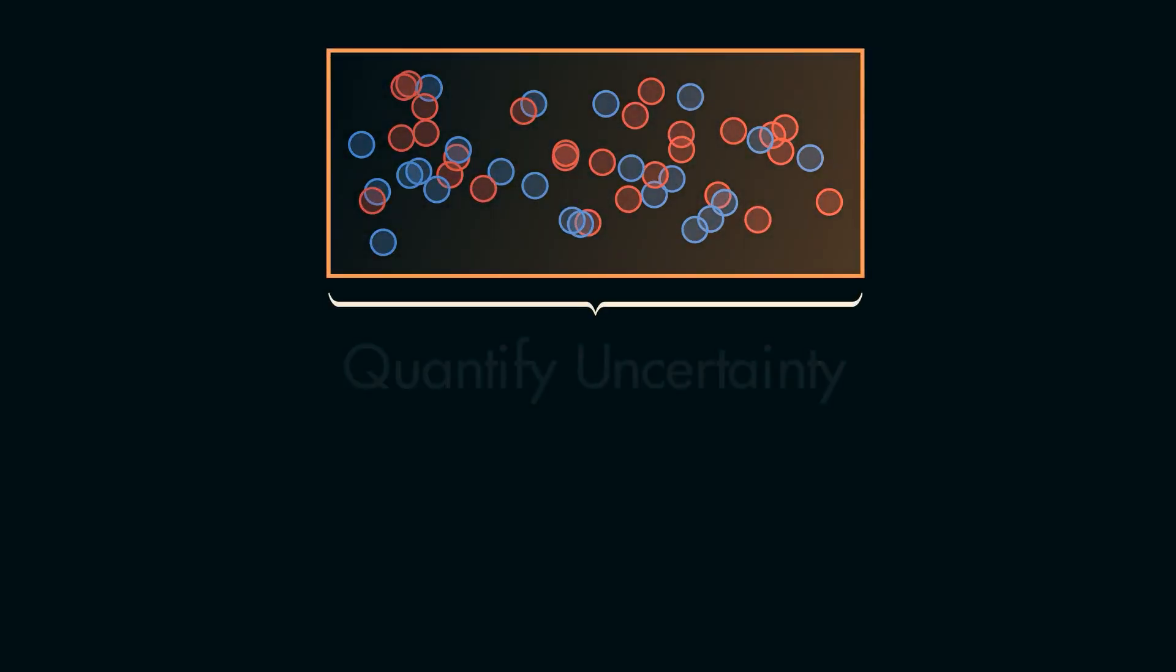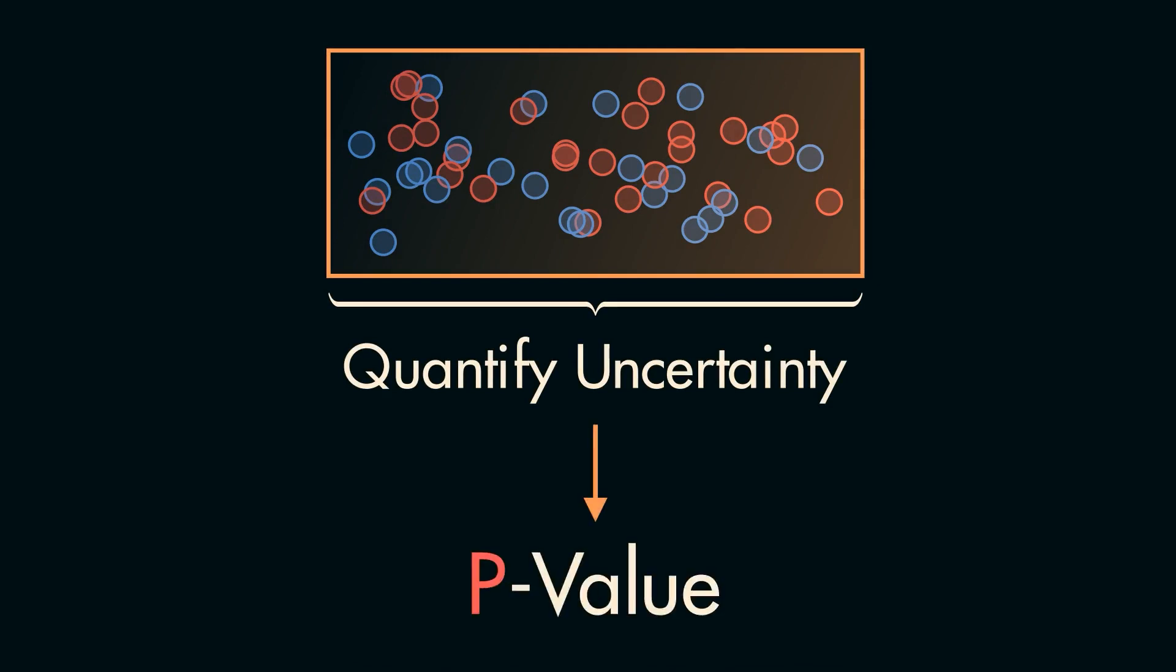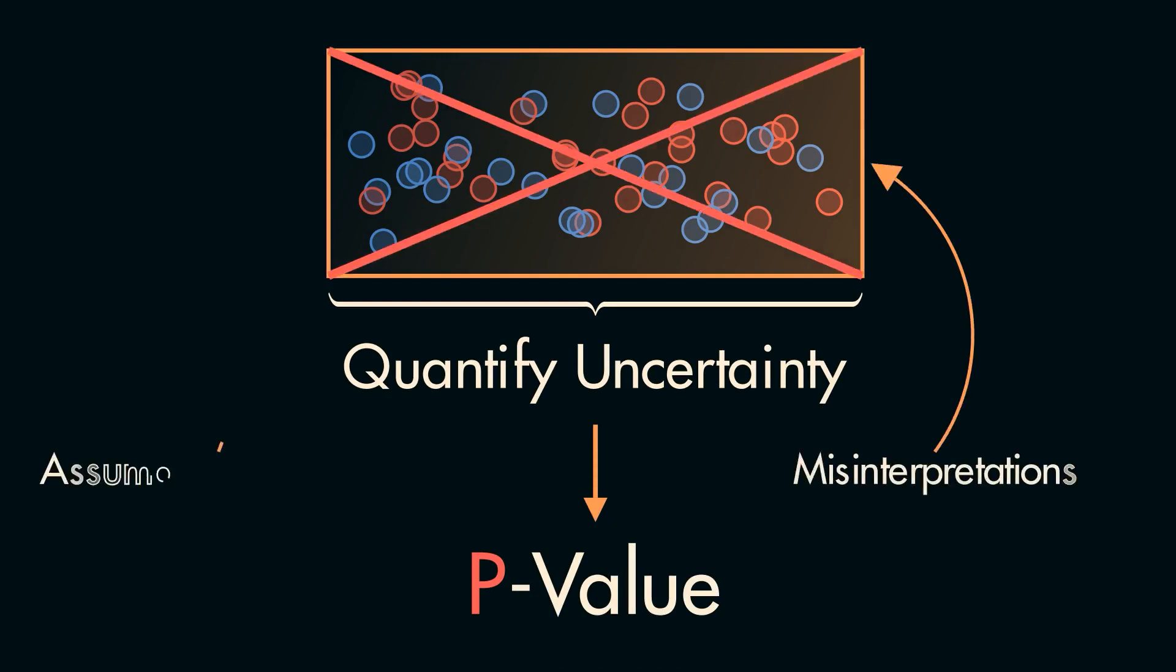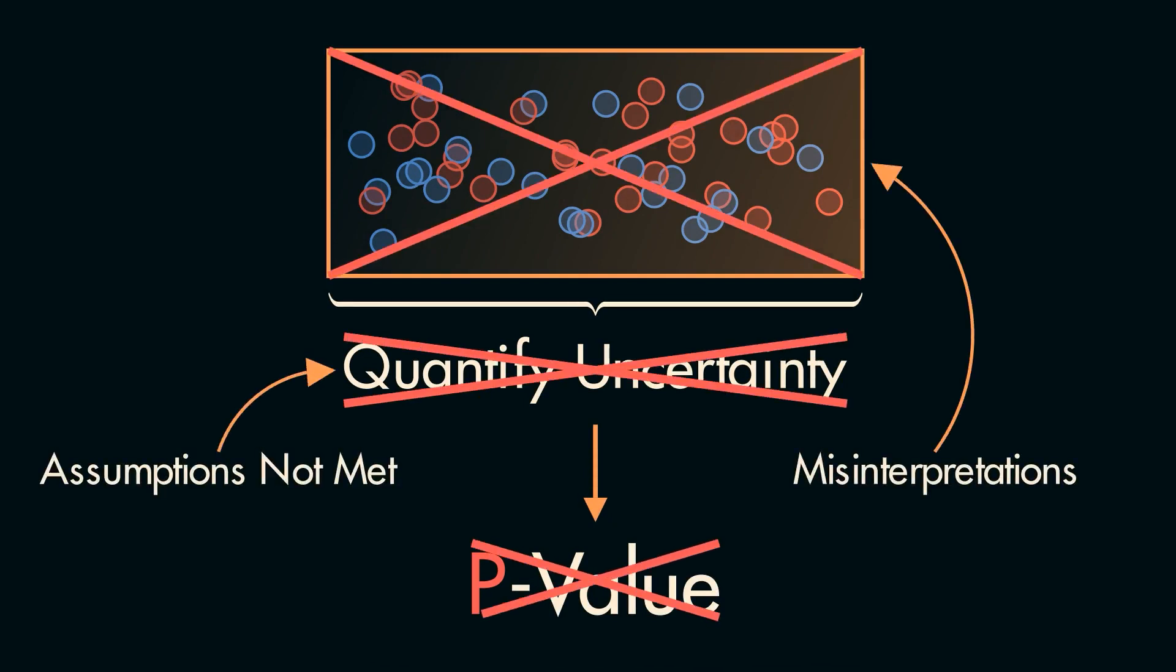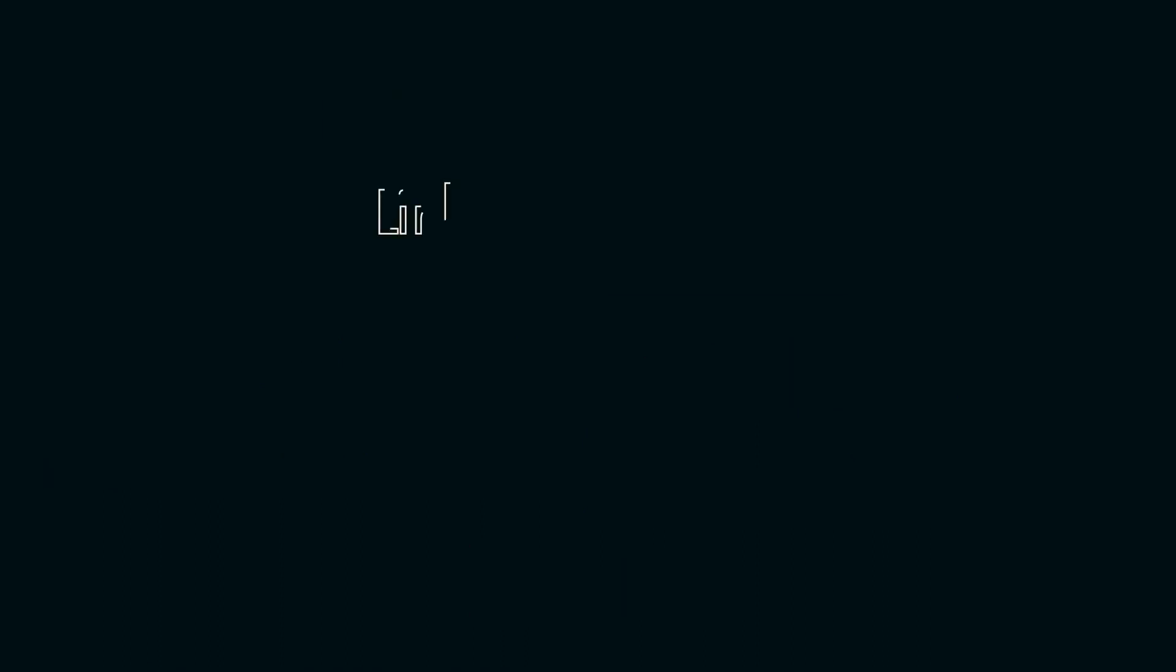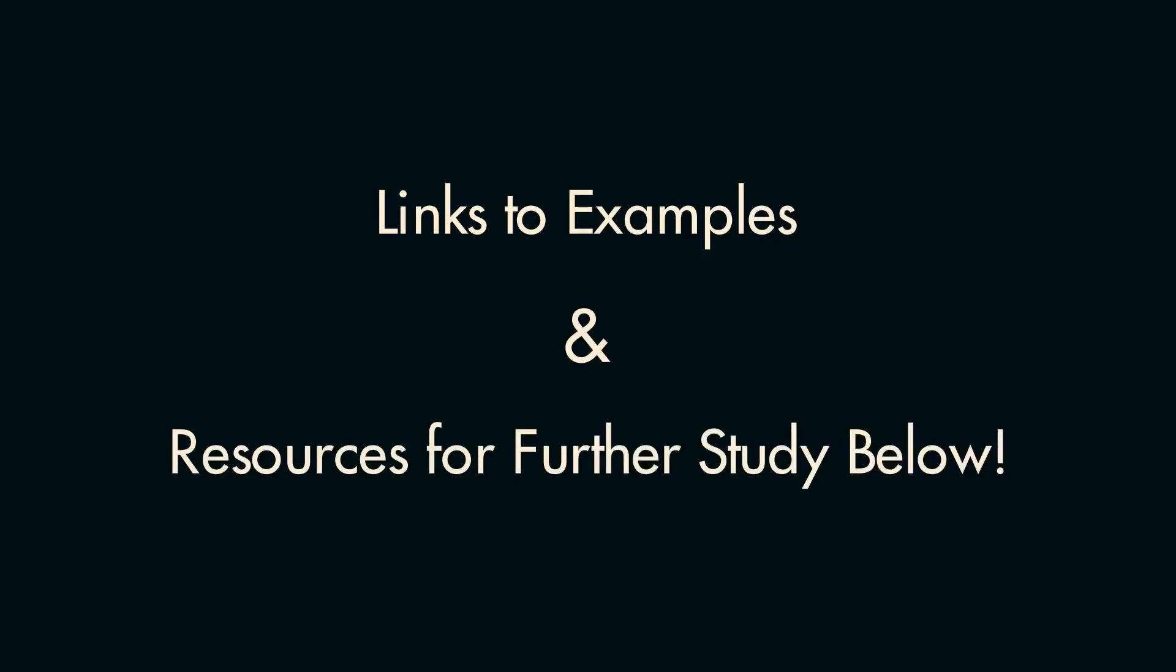In the end, P-Values are an important statistical measure that allow you to easily quantify the level of uncertainty you have with a given hypothesis. However, as is common in statistics, it is easy for things to go wrong if metrics are misinterpreted or assumptions aren't met. Hopefully, now you can go forward with confidence in your ability to interpret P-Values, and as always provided more resources for further study. Thanks for watching.